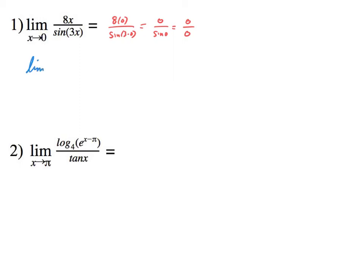So I'm going to now take the limit as x approaches 0. What I'm going to do is take the derivative of the top, so 8x becomes 8. And the bottom will become — not 3 sine — the derivative of sine is cosine 3x. Because you take the derivative of the sine of 3x, and then take the derivative of 3x, put it out front. That would be your new derivative.